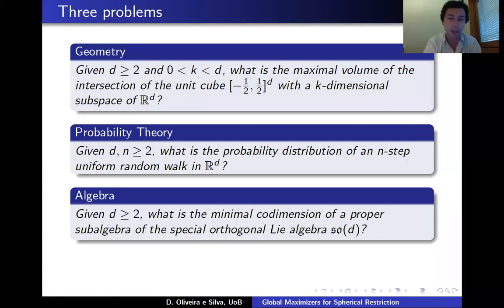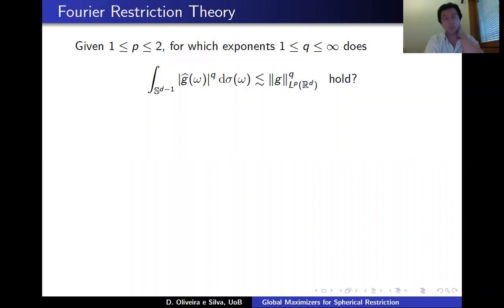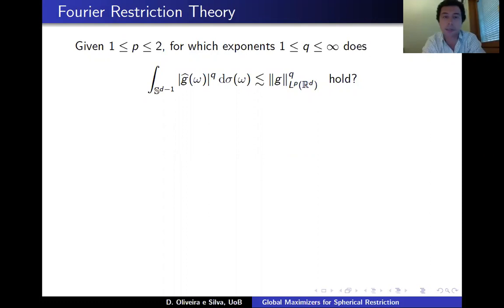These three questions are obviously very different, but each made a natural appearance in the solution to an extremal problem in harmonic analysis. This problem has to do with Fourier restriction theory. The Fourier transform of an L^1 function is continuous, so it makes sense to restrict it to any set, including a set of Lebesgue measure zero like the unit sphere. At the other end, when p is 2, Plancherel's theorem tells us the Fourier transform of an L^2 function is no better than L^2, so it doesn't make sense to restrict it to a set of measure zero like the unit sphere.